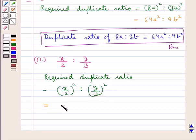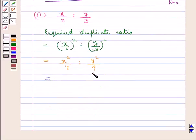Or, you can say, x square upon 4 is to y square upon 9. This can also be written as 9x square, that is, we cross multiply, is to 4y square.